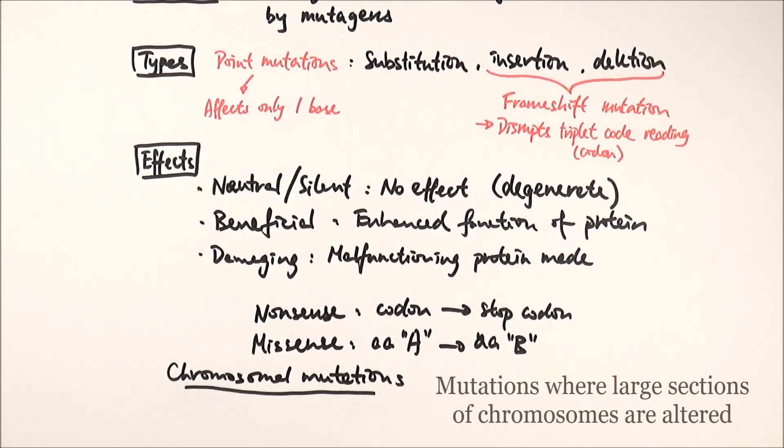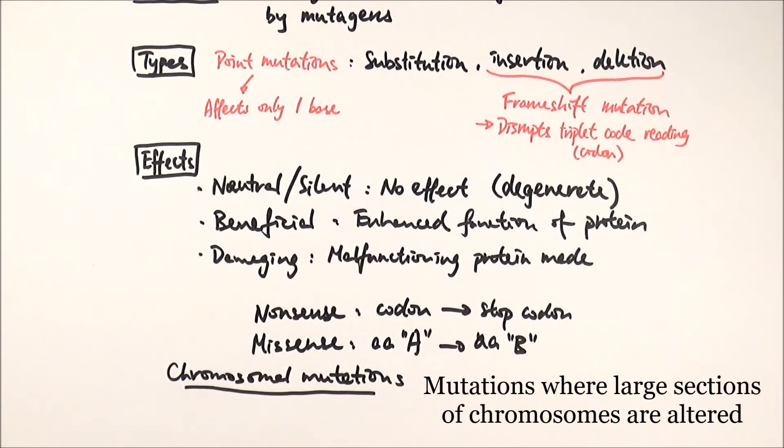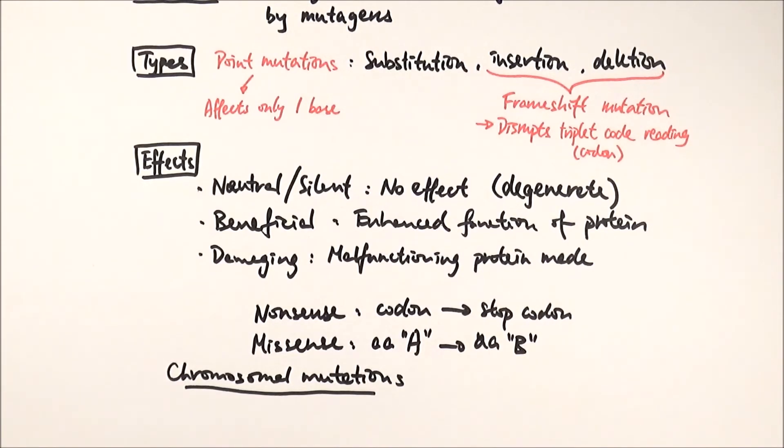On top of that, you can also have chromosomal mutations where bigger sections of chromosomes have been changed, rather than individual or one to two bases. For example, you can have deletion, which is deleting part of a chromosome.